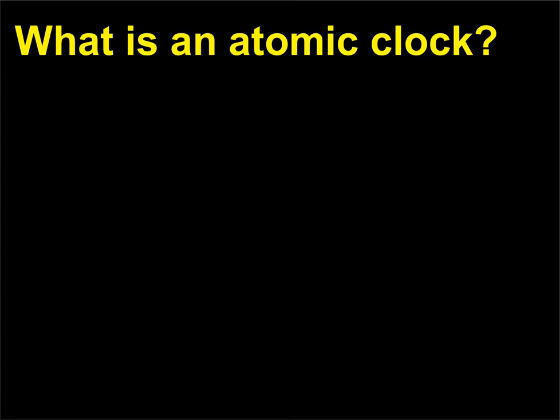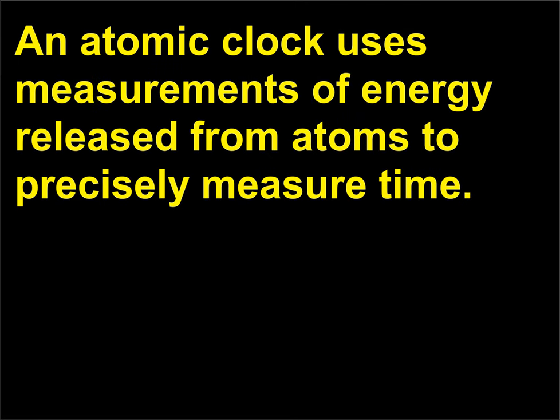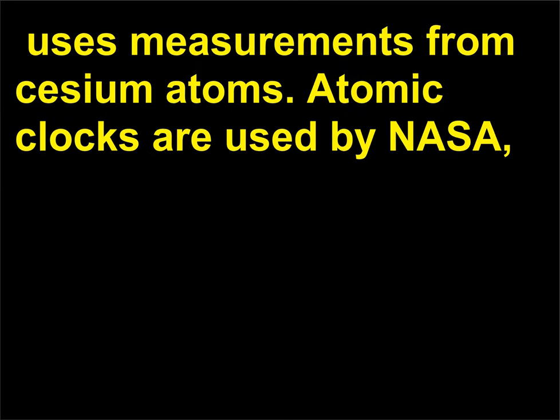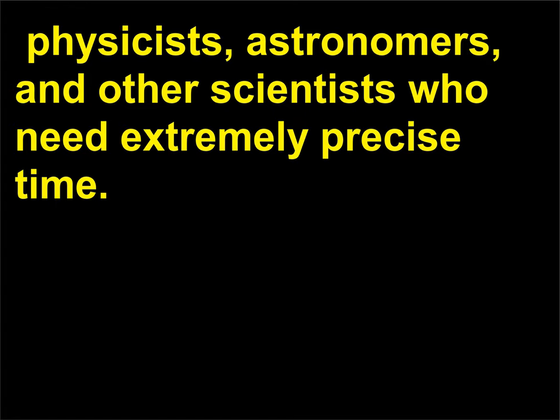What is an atomic clock? An atomic clock uses measurements of energy released from atoms to precisely measure time. The current model of the atomic clock, created in 1957 by Norman Ramsey, uses measurements from cesium atoms. Atomic clocks are used by NASA, physicists, astronomers, and other scientists who need extremely precise time.